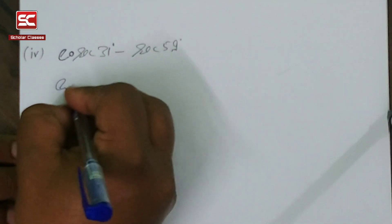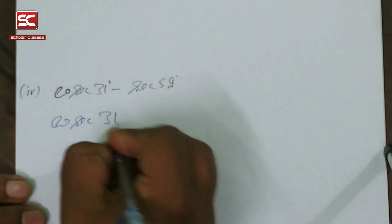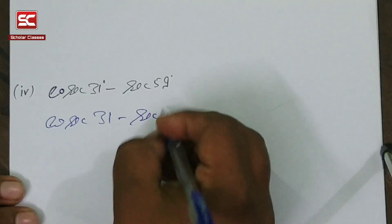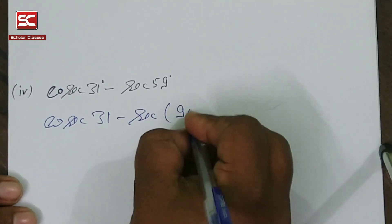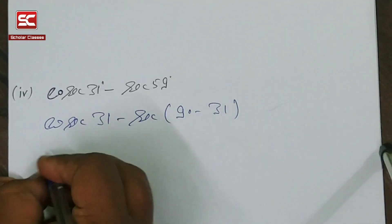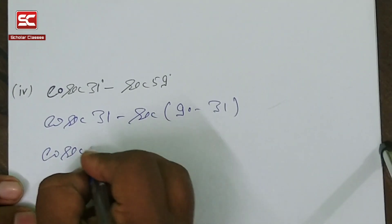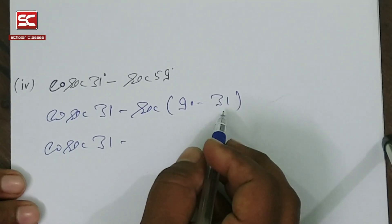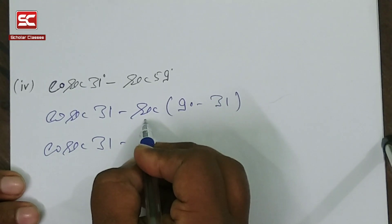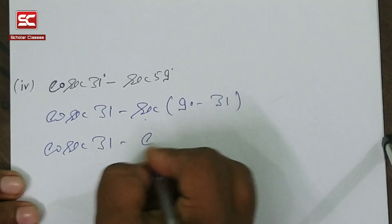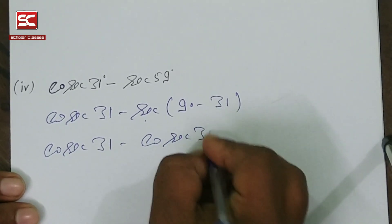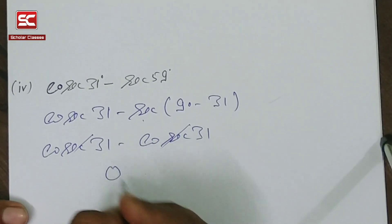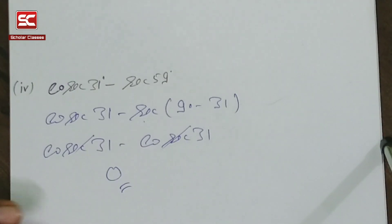Now come to the fourth part of the question: cosec 31 minus sec 59. We change 59 as (90 minus 31), so we write cosec 31 minus sec(90 minus 31). Since sec(90 minus theta) equals cosec theta, sec(90 minus 31) equals cosec 31. cosec 31 minus cosec 31 cancels, and the final answer is 0.